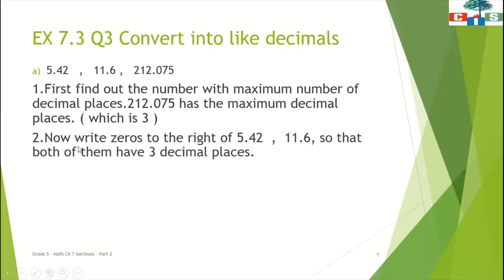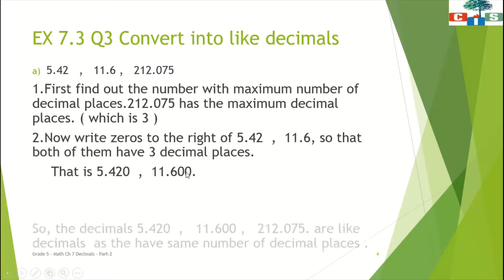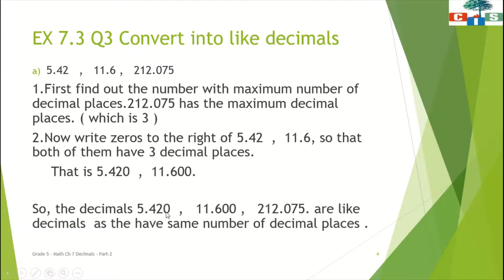In the second step, you have to write zeros to the right of the next given decimal numbers. Here we have 5.42 and 11.6. We have to make these decimal numbers like decimals by putting zeros to the right of 5.42 and 11.6, so that both of them should have three decimal places. So that gives us 5.420 and 11.600. Therefore, 5.420, 11.600, and 212.075 are like decimals as they have the same number of decimal places.